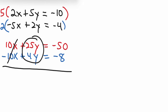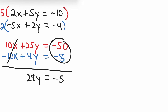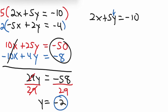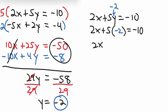The numbers in front of x are the same except one's positive and one's negative, so when we add them together the x terms cancel. Adding everything: 25y plus 4y is 29y, and negative 50 minus 8 is negative 58. Dividing both sides by 29 gives y equals negative 58 divided by 29, which is negative 2. Now let's find x using the top equation: 2x plus 5y equals negative 10, with y equal to negative 2.